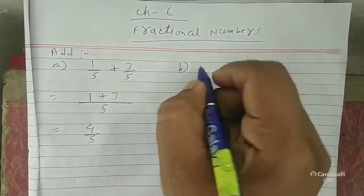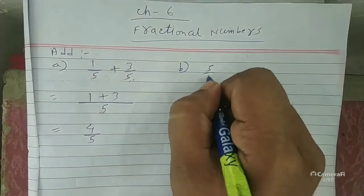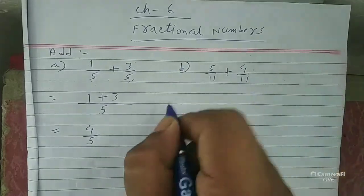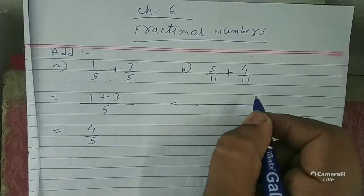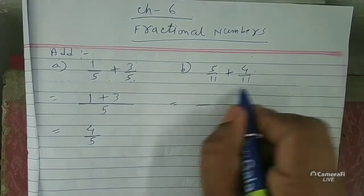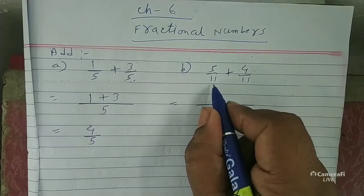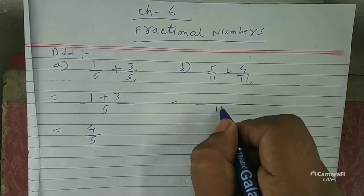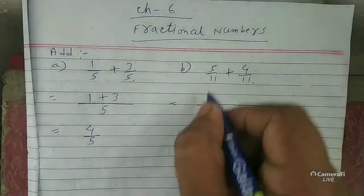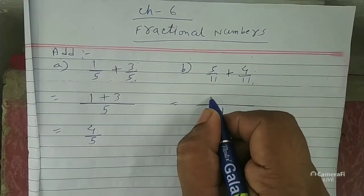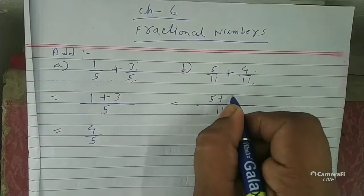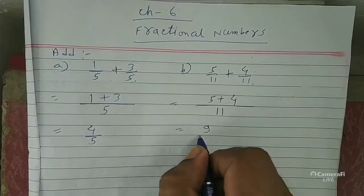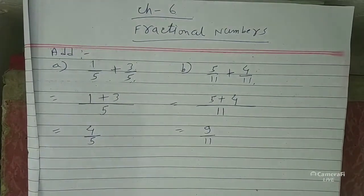Question number B: 5 by 11 plus 4 by 11. The denominator is 11 and 11 — both are the same, so the common denominator is 11. Numerator 5 plus 4 is equal to 9 by 11.